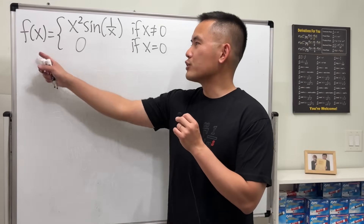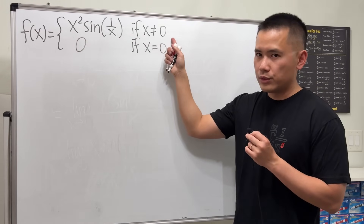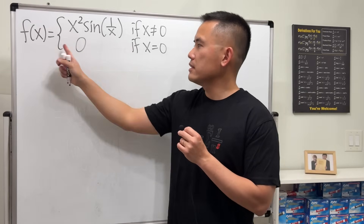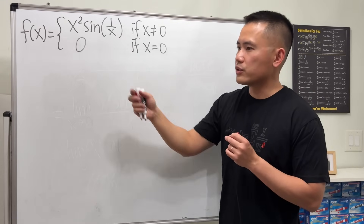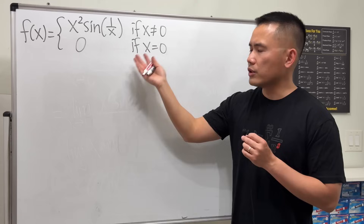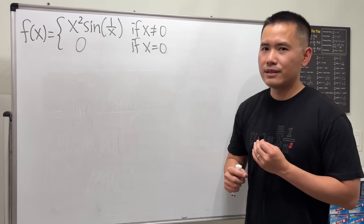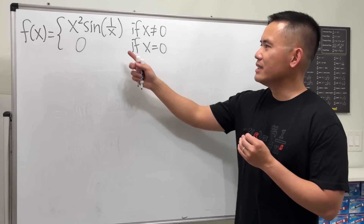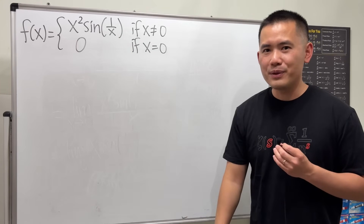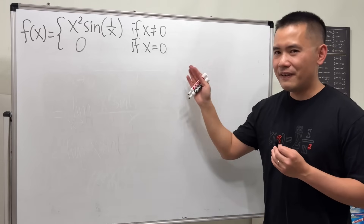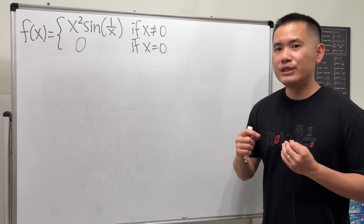Here's the deal: we have the function defined as x squared times sine of one over x if x is not equal to zero, and f of x is equal to zero if x is equal to zero. If you differentiate this function using the product rule and the chain rule, it looks like you have to plug in zero for x and you'll run into trouble because this expression is undefined. But in fact this function is differentiable.